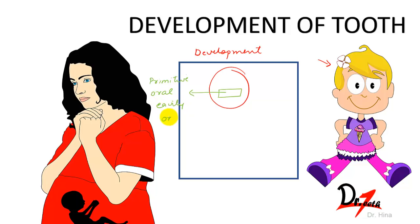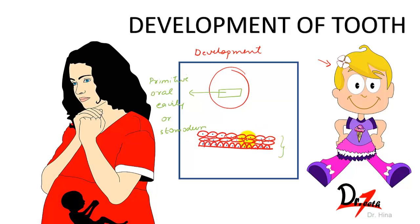The primitive oral cavity is lined by stratified squamous epithelium, and this epithelium is called the oral ectoderm. This oral ectoderm contacts with the endoderm.